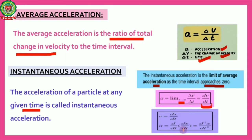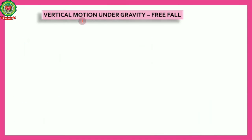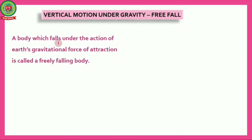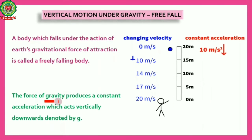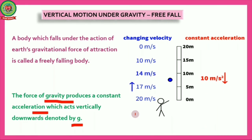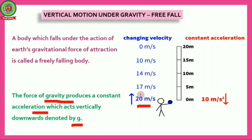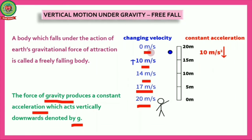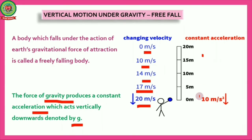Since v = dx/dt, acceleration becomes d/dt(dx/dt), which means acceleration equals d²x/dt². Next is vertical motion under gravity, i.e., free fall. A body which falls under the action of Earth's gravitational force of attraction is called a freely falling body. The force of gravity produces a constant acceleration acting vertically downward, denoted by g. A ball thrown vertically upward always moves with constant acceleration of 10 m/s².